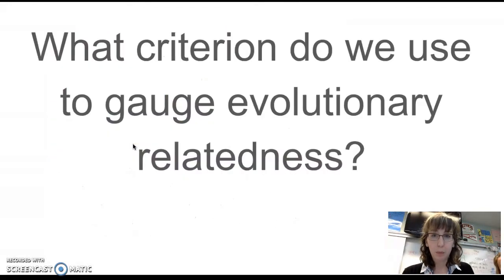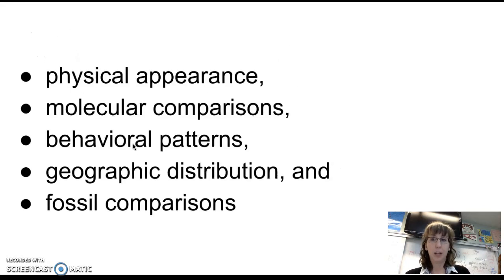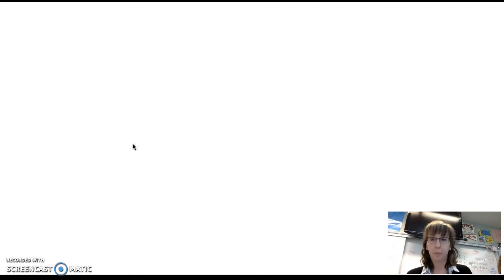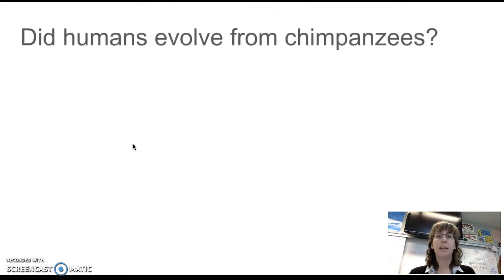So what criterion do we use to gauge evolutionary relatedness? This is a question on your station one. Here's the answer: we use physical appearance—think homology and analogy—molecular comparisons—think DNA—behavioral patterns if they act similarly, geographic distribution where they're found, and fossil comparisons, which is comparing to really deceased animals from a long long time ago. Do they look similar?